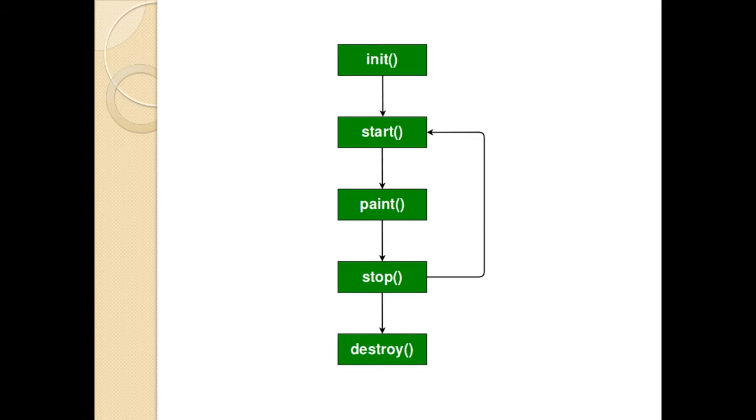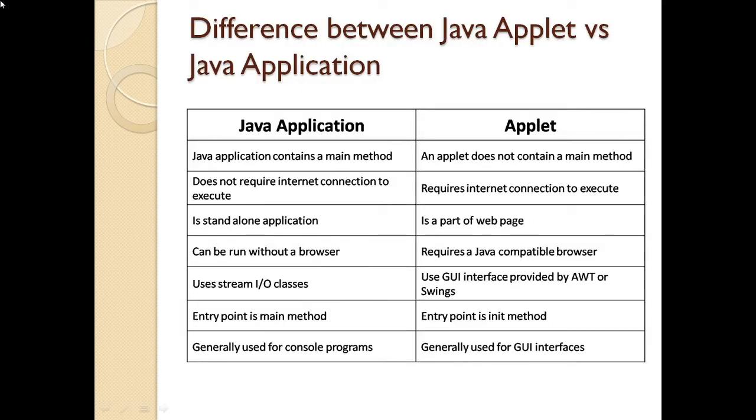Now, let's see what is the difference between Java applet and Java application. In Java application, it contains a main method. An applet does not contain a main method. Java application does not require internet connection as it is a standalone application. Applet will require internet connection to execute because it is on the browser.